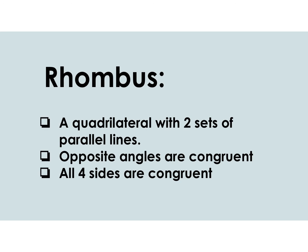Next we're going to be talking about a rhombus. A rhombus is a quadrilateral with two sets of parallel lines where opposite angles are congruent and all four sides are equal or congruent. Here is an example of a rhombus.